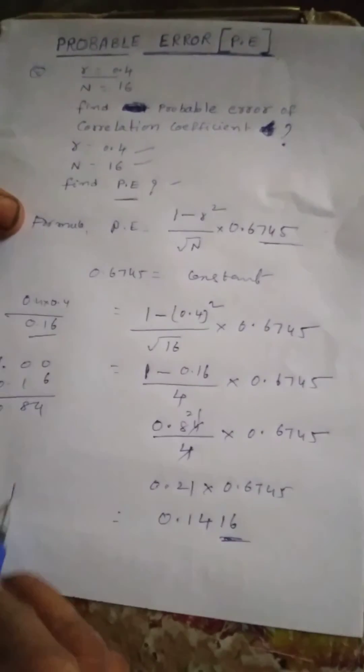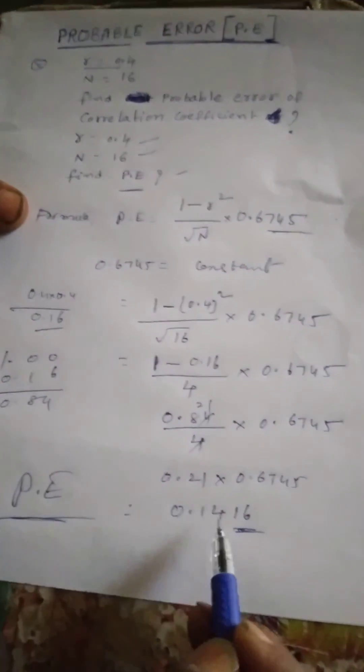This is the probability error, P.E. So, 0.1416.